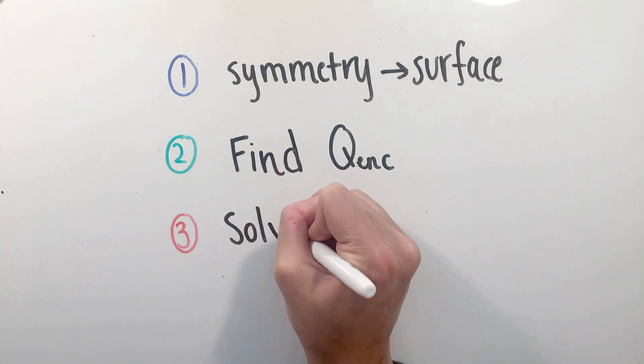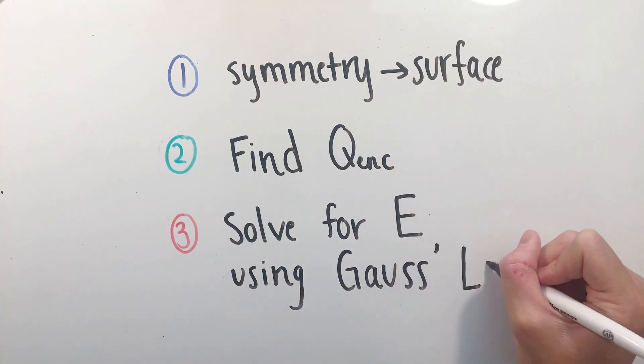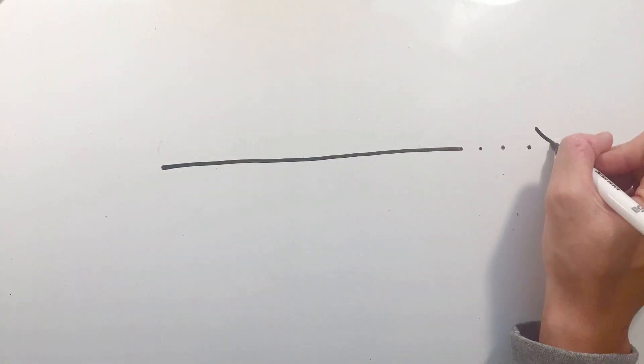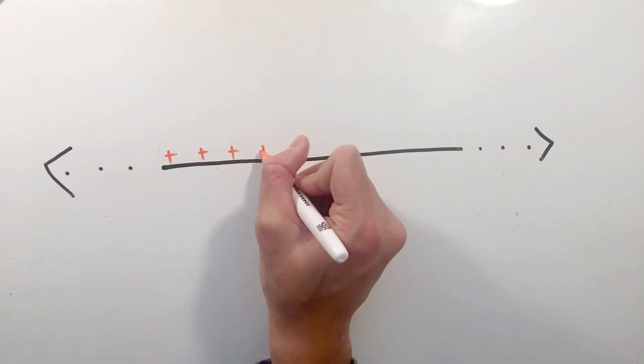Third, utilizing the symmetries of your surface, solve for the electric field, making sure to consider properties of conductors and the flux calculations mentioned previously. Let's see this process in action, with some common charge distributions you may see,